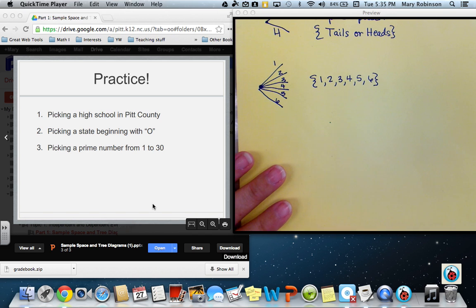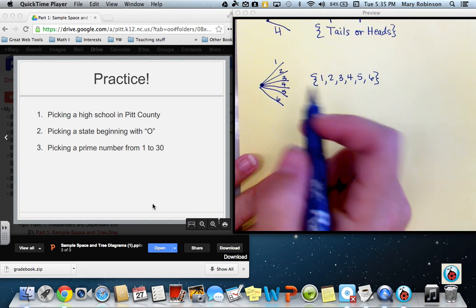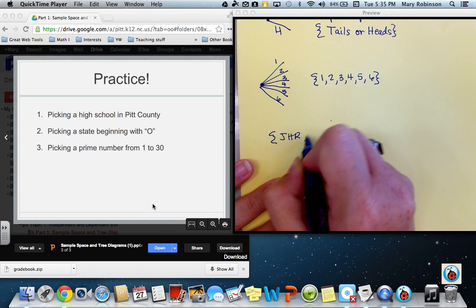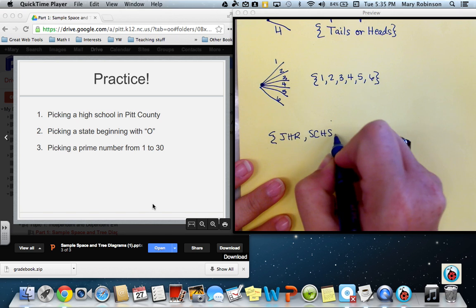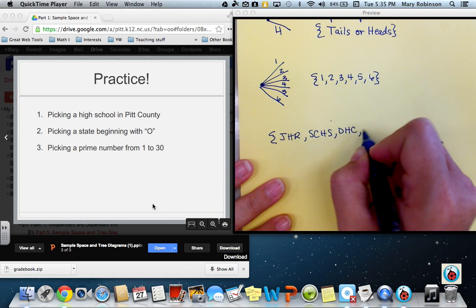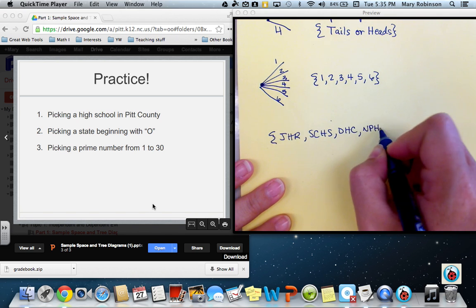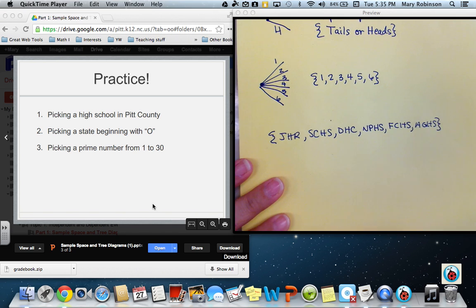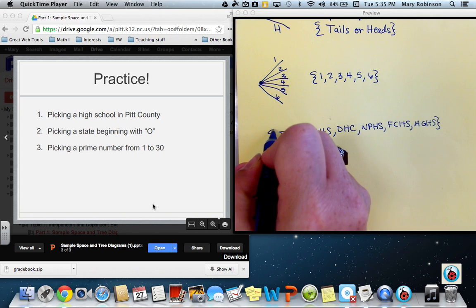If we wanted to pick the high schools in Pitt County, the sample space would be looking at the space of J.H. Rose, South Central High School, D.H. Conley, North Pitt High School, Farmville Central High School, and Aiden Grifton High School. Yeah, that one's really ugly.